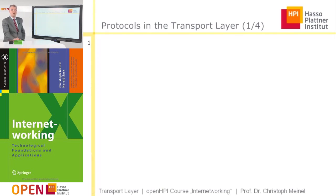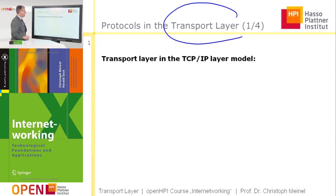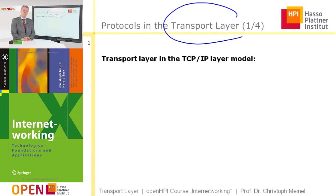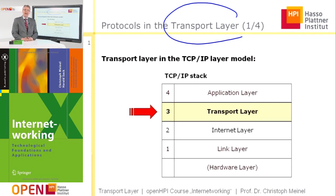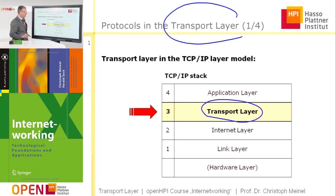Welcome to a new week in our OpenHPI course about internetworking. In this week we want to discuss protocols on the transport layer of the TCP/IP layer model. This model described what kind of tasks need to be solved to let computers communicate via an internet, with different layers where different tasks are solved by the protocols located on each layer. For example, on the internet layer there were IP protocol version 4 and version 6, which we discussed in the last two weeks. And in this week we want to discuss the protocols on the transport layer.